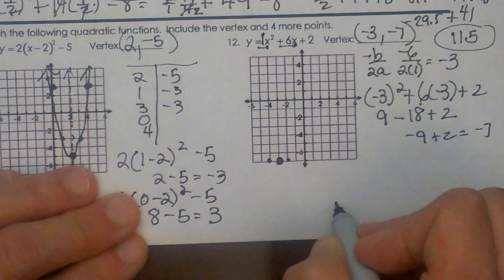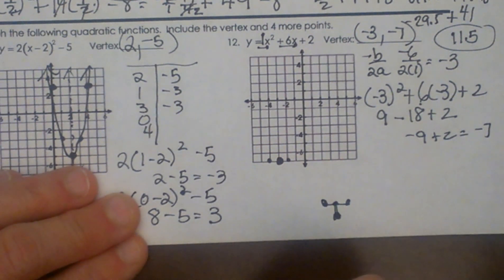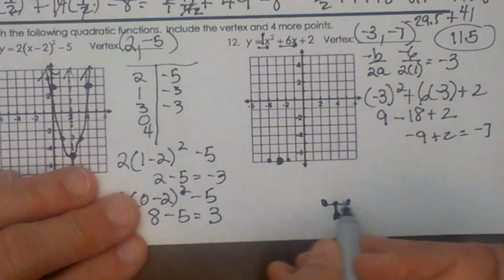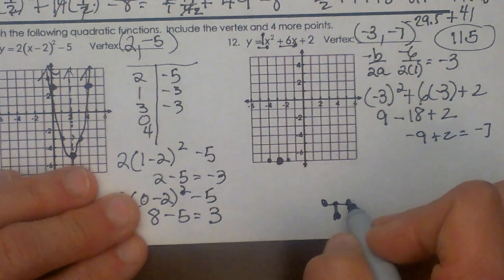From the vertex you can go up 1 and over 1, up 1 and over 1 to get the next output. Almost like a slope of 1 over 1. To get the next output you're going to go up 3 and over 1.